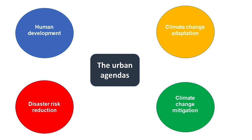In this short video we're looking at the connections between four urban agendas: human development, disaster risk reduction and preparedness, climate change adaptation, and climate change mitigation, and how more coherence can be achieved across them.